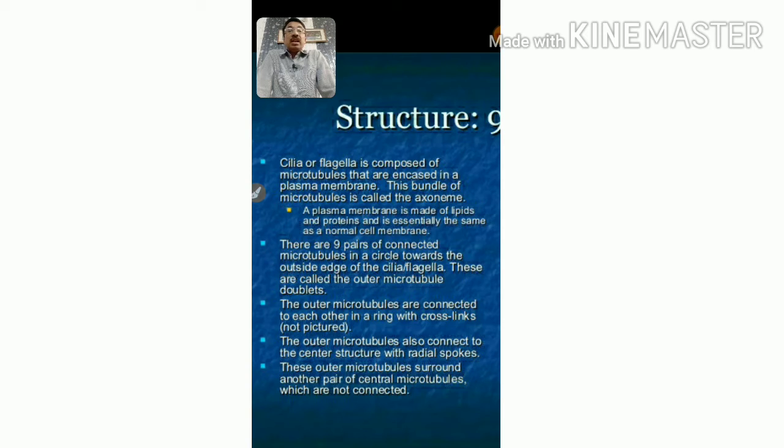This is the structure of the 9 plus 2 pattern of cilia and flagella. These are present in our body in the respiratory tract. Flagella help in movement and are present in euglena. Cilia are present on the whole surface of paramecium's body. Both help in movement.